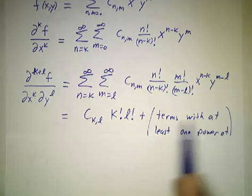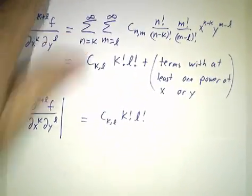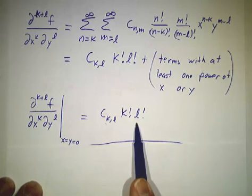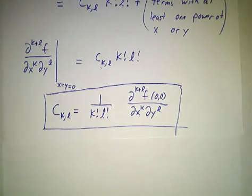We have one term that's c_kl times k factorial times l factorial. And then you have a bunch of extra terms that have powers of x's or powers of y or both. Then we evaluate this at 0, and all you get is that one term. Then you divide by k factorial times l factorial, and there you go.